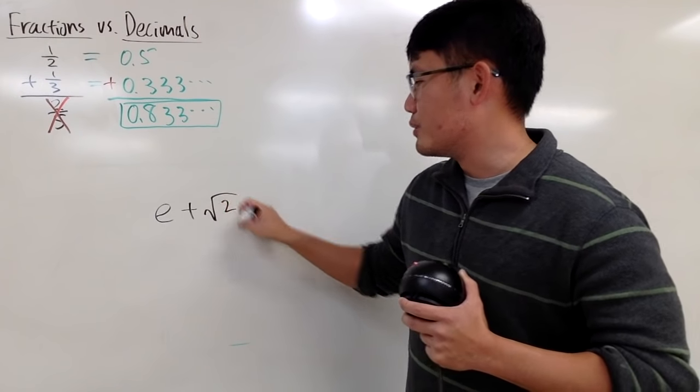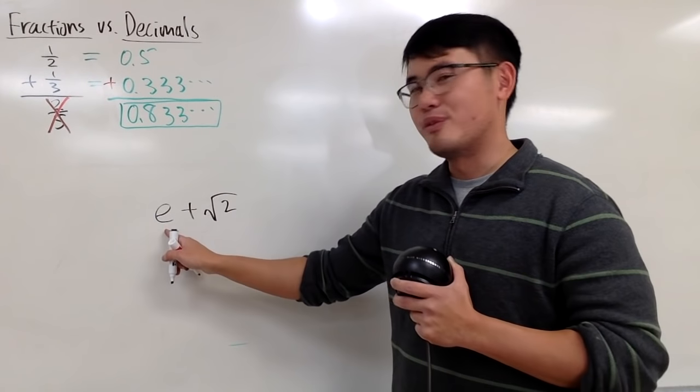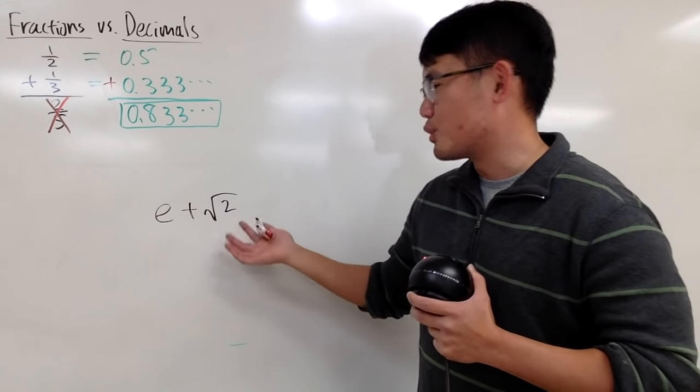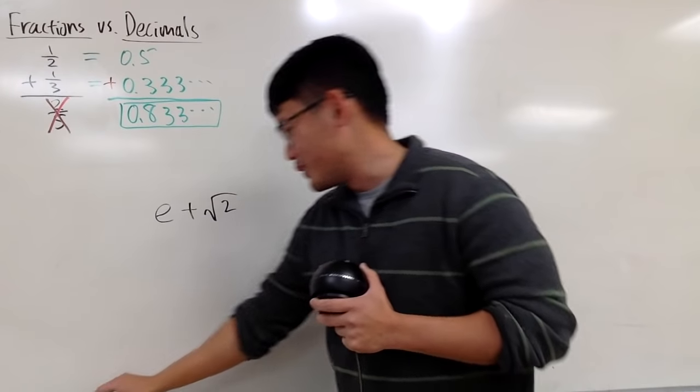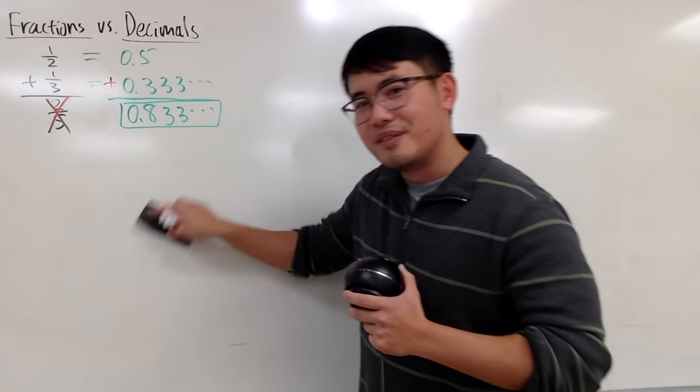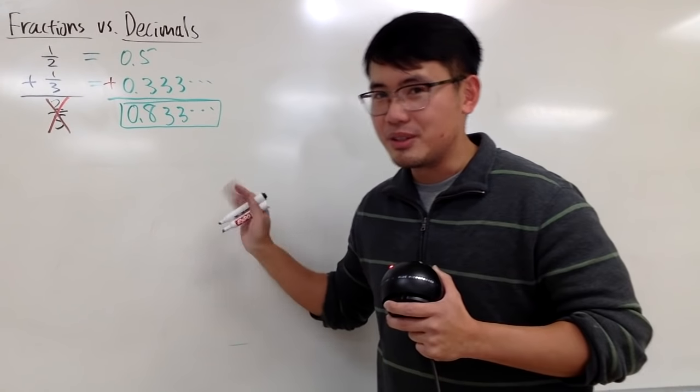Imagine you have to do e plus square root of 2. Ah, you have to figure out what e is, and you have to figure out what square root of 2 is for decimal. It's not so easy. But I do have some videos on these numbers already, so you guys can check that out.